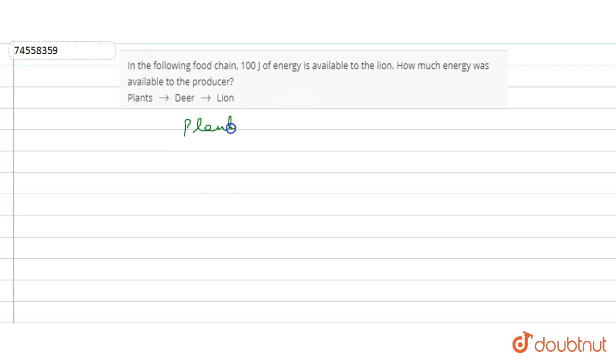Now, I know that in the food chain, the food chain starts from the producer. Producers are our consumers - Deer is our primary consumer, and Lion is our secondary consumer.